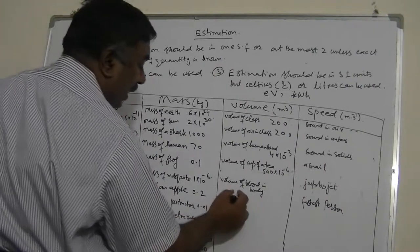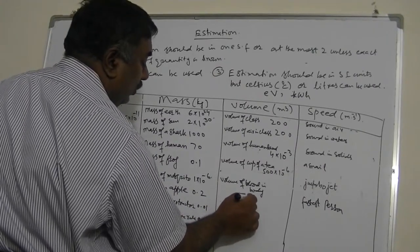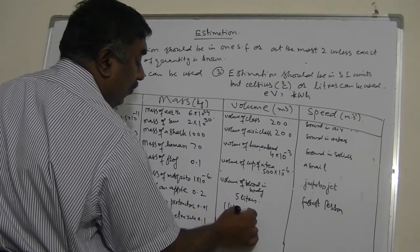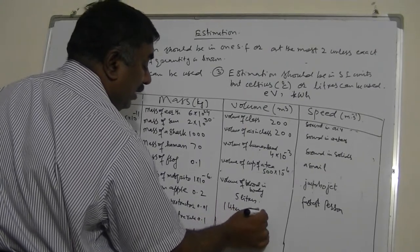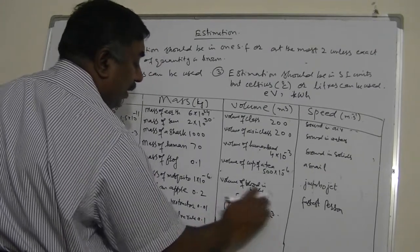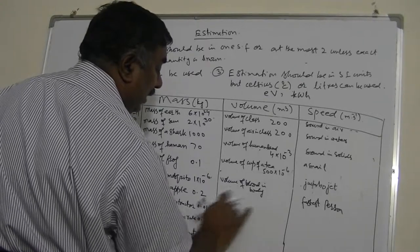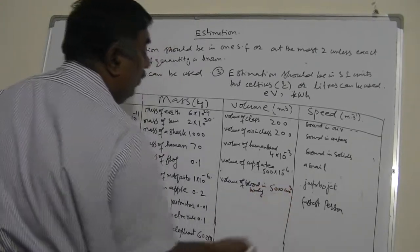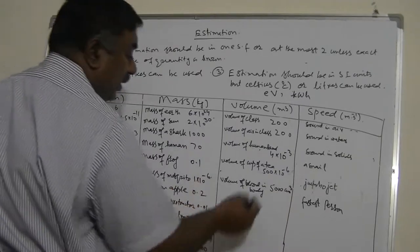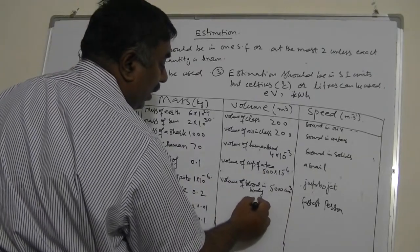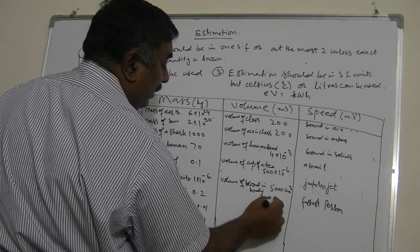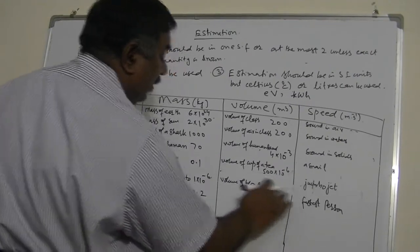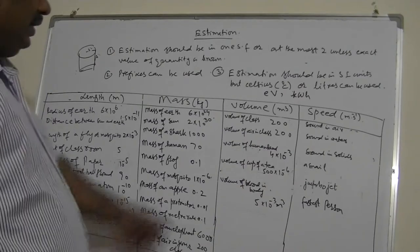The volume of blood in the human body is approximately 5 liters. Since 1 liter equals 1,000 cm³, this is 5,000 cm³, or 5 × 10⁻³ m³.